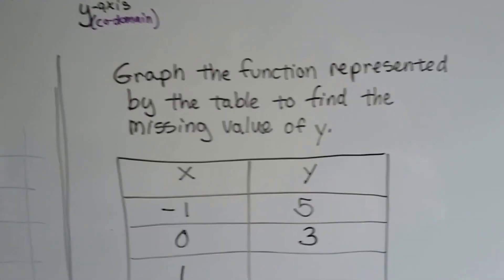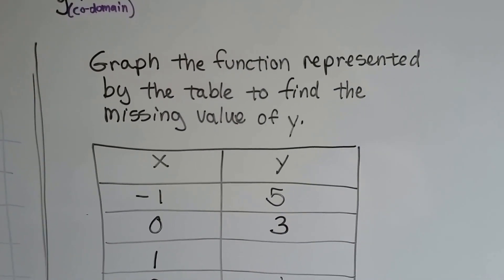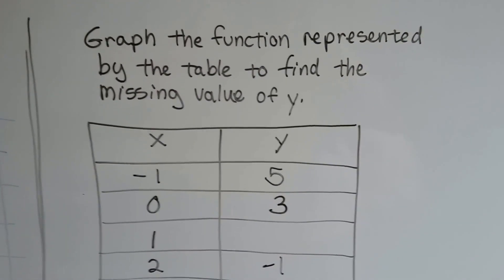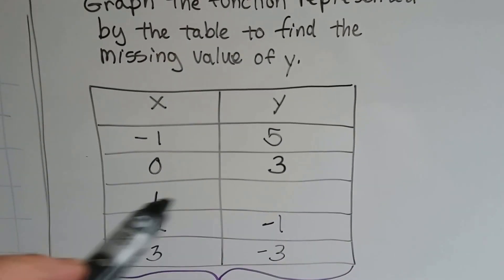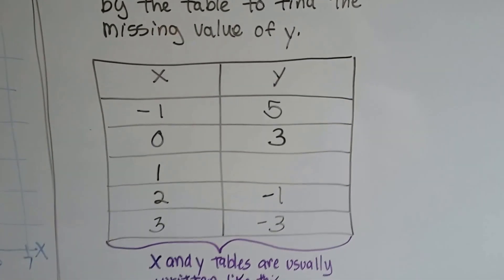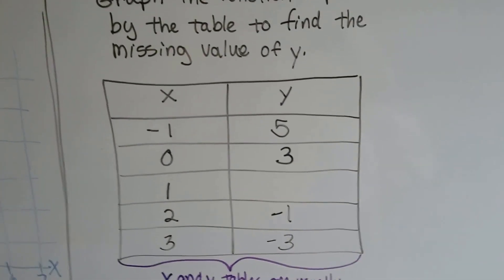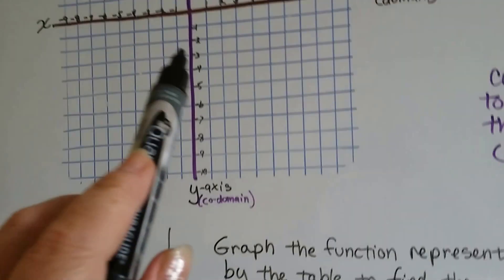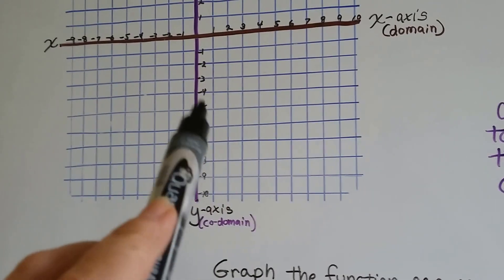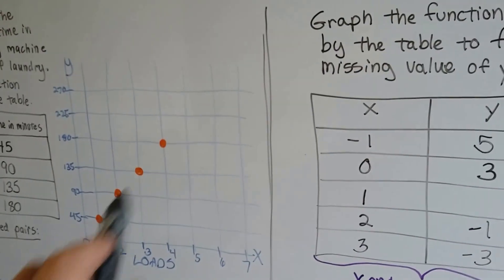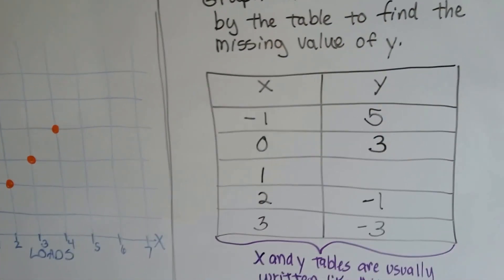So, if it said graph the function represented by the missing table to find the missing value of y, all we have to do is graph this on our coordinate plane, and we'd be able to see the line that was developing, and we'd see the missing point.